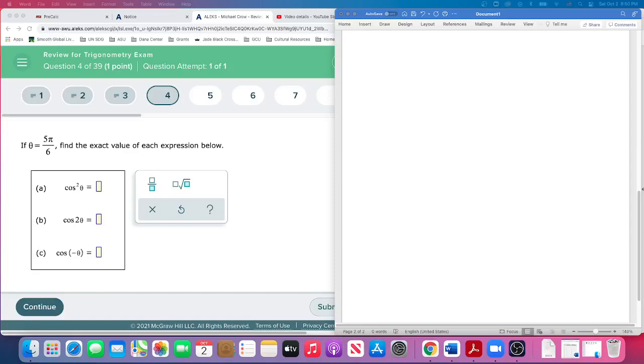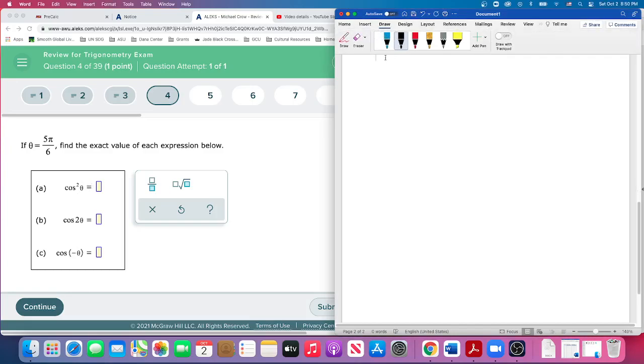Question number four: we're given an angle theta equals 5π/6 and we're asked to find exact values for parts a, b, and c. So cosine squared of theta - what we can do here is...